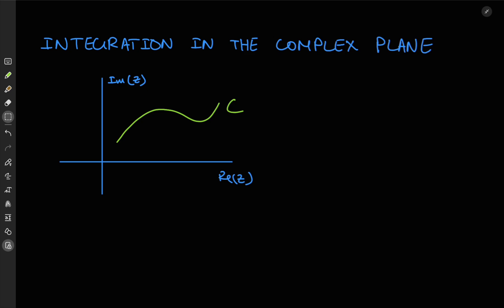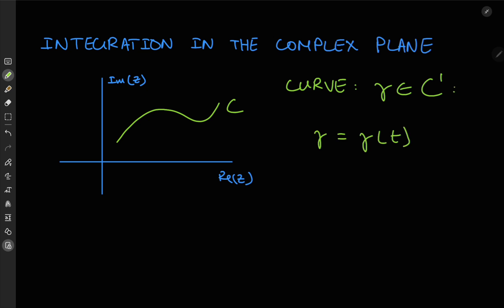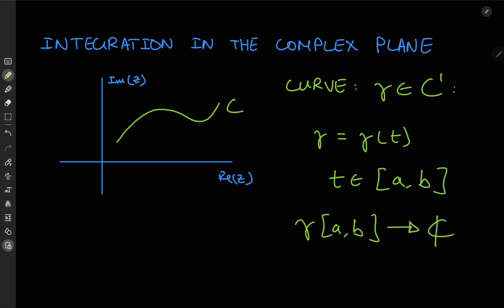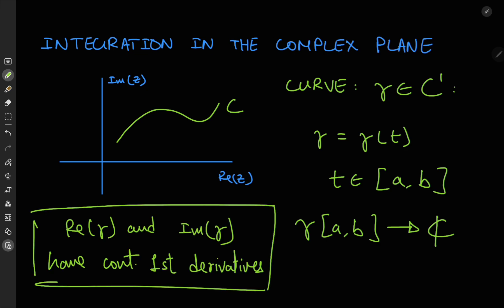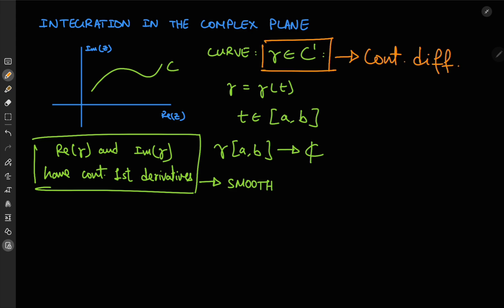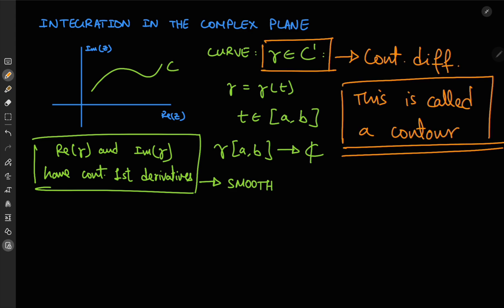These are not just any curves. We define a curve in the complex plane by gamma, where gamma belongs to the set C1 — the set of continuously differentiable functions, or functions with continuous first derivatives. Gamma can be parameterized by a real variable t bound between two real numbers a and b, so gamma is a continuous mapping that takes the interval ab onto the complex plane. Bear in mind that gamma belonging to C1 means the real and imaginary parts of gamma have continuous first derivatives. Such a curve is called smooth, and smoothness is important because it eliminates pathological cases like a curve irregular enough to have infinite length. Such smooth curves in the complex plane are called contours, and the entire subject of integrating complex-valued functions is called contour integration.